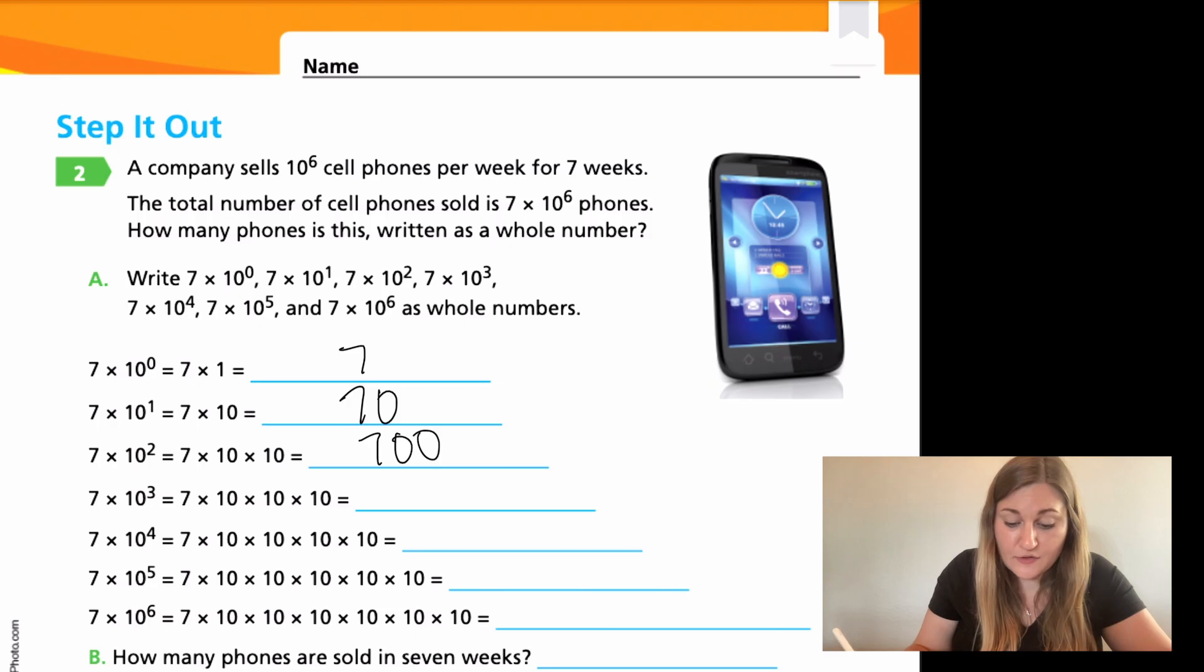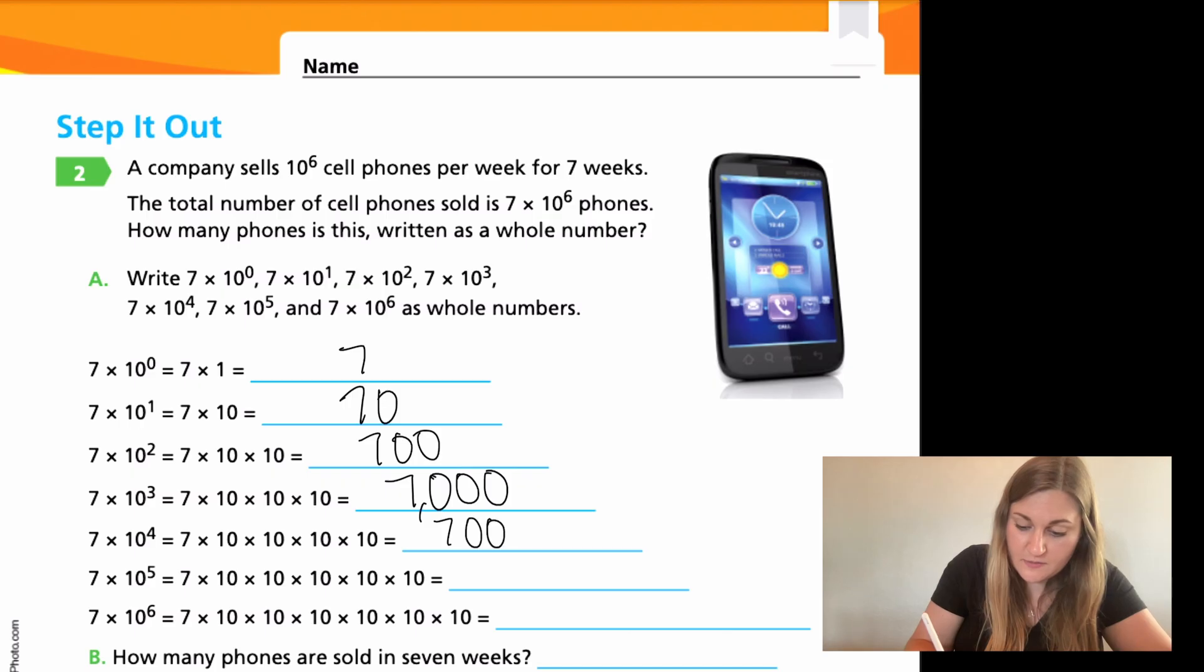So seven times 10 to the third showing seven times 10 times 10 times 10 to the third. Guess how many zeros I'm going to have? One, two, and three, making 7,000. Seven times 10 to the fourth, there are four tens, which means I have four zeros. Seven, one, two, three, four, making 70,000. Keep going. Seven times 10 to the fifth. I have five tens, which means I need five zeros. One, two, three, four, five. Now I have 700,000.